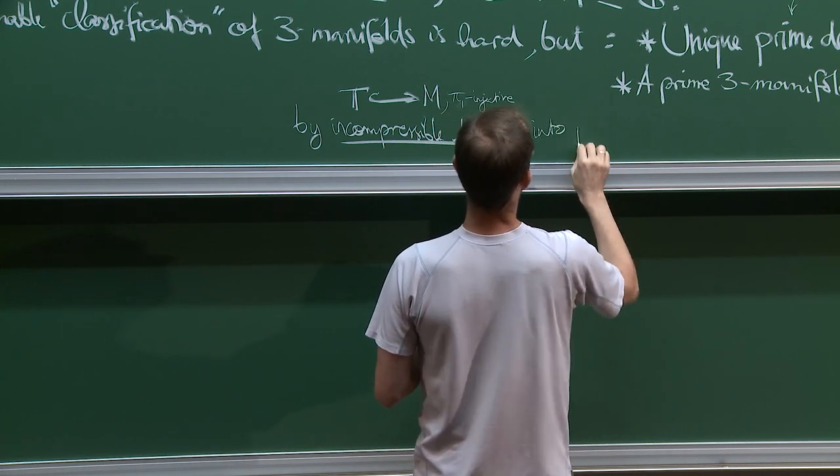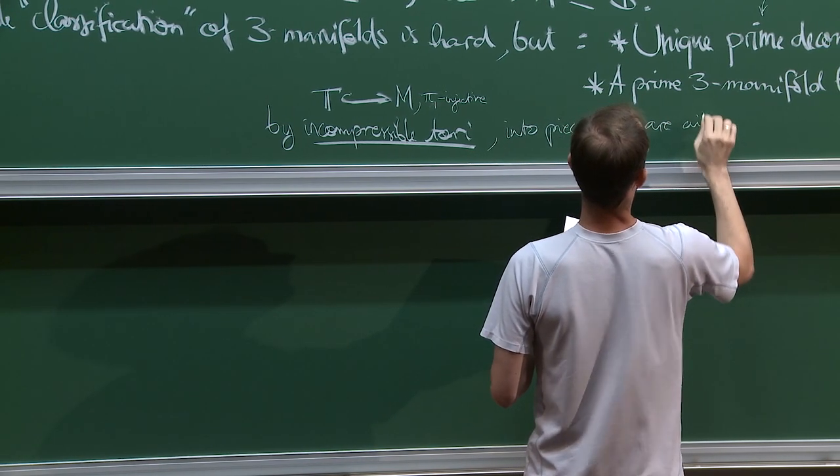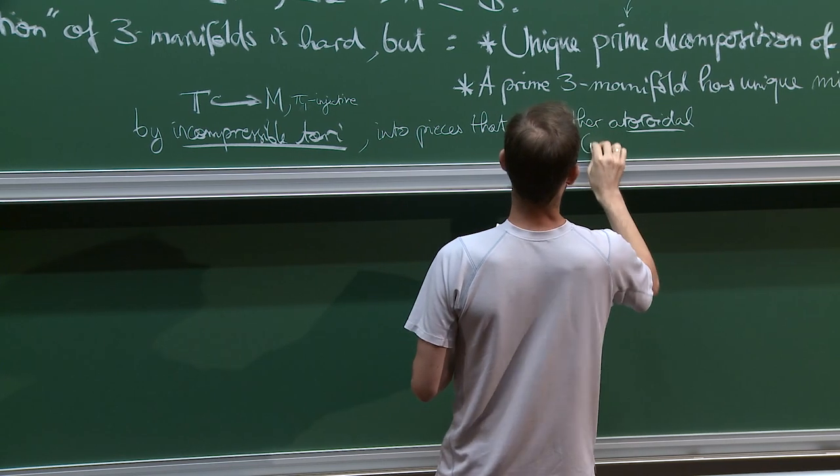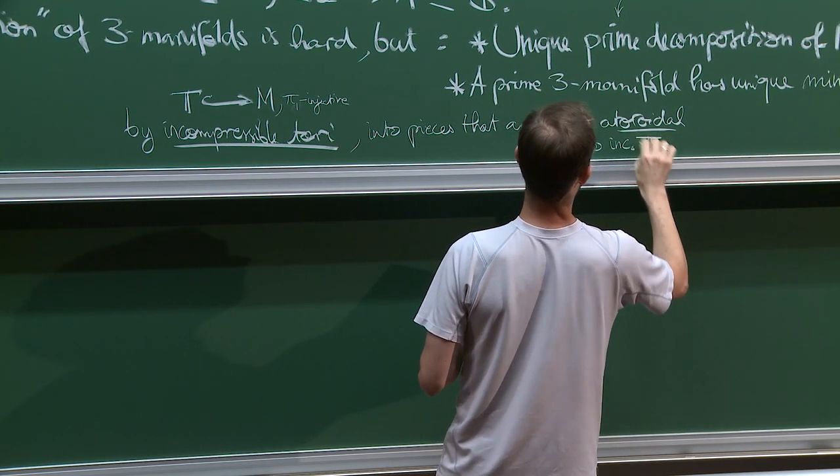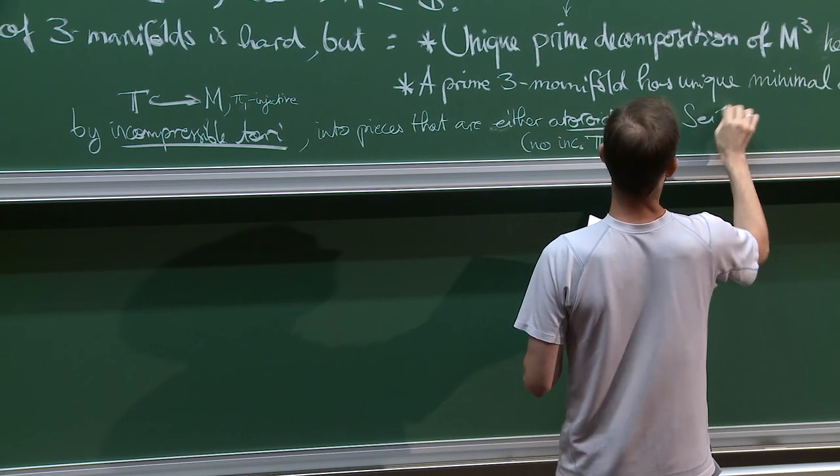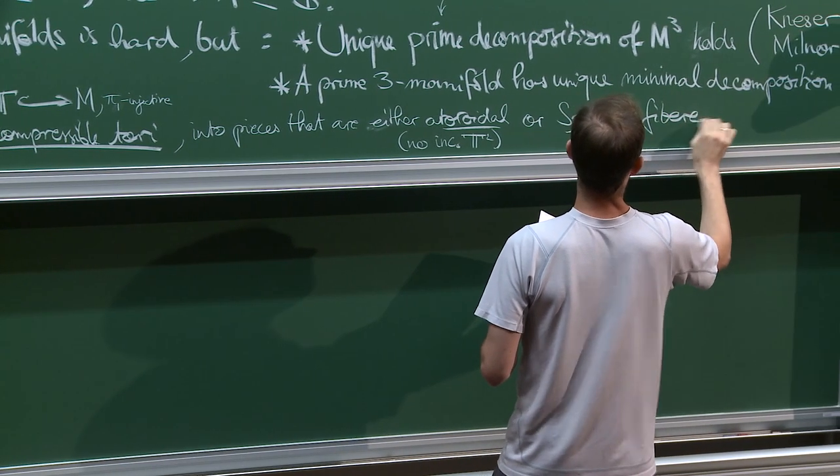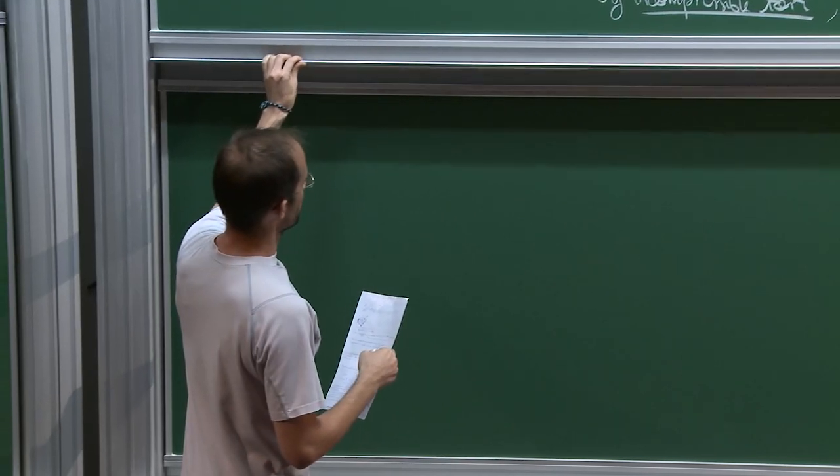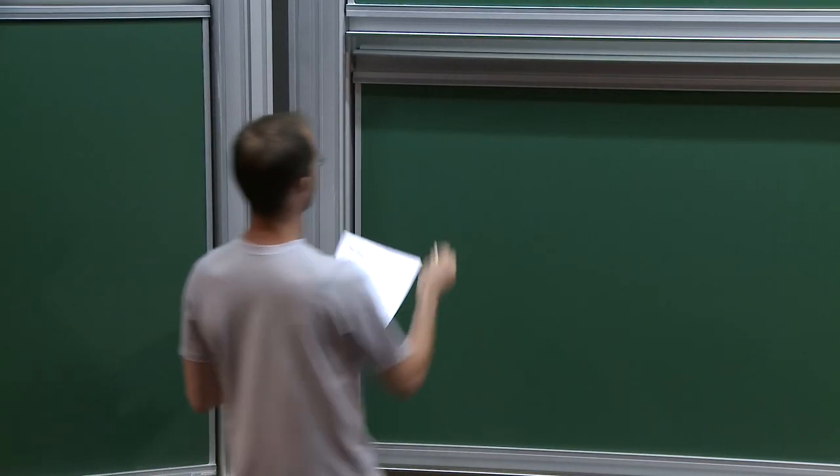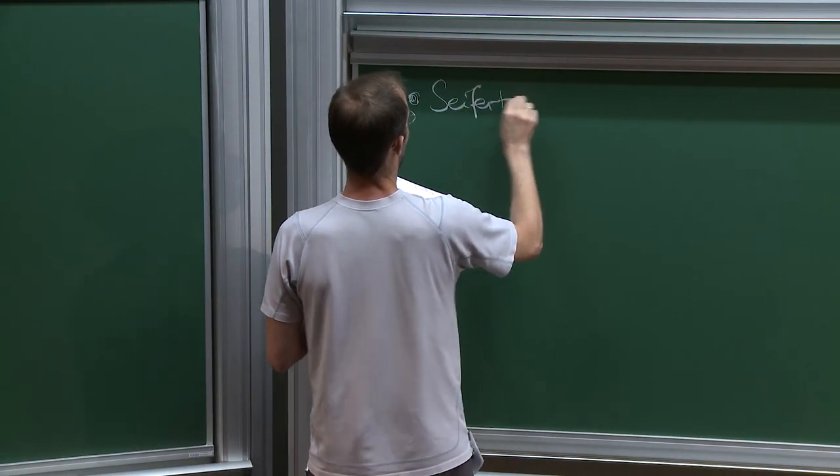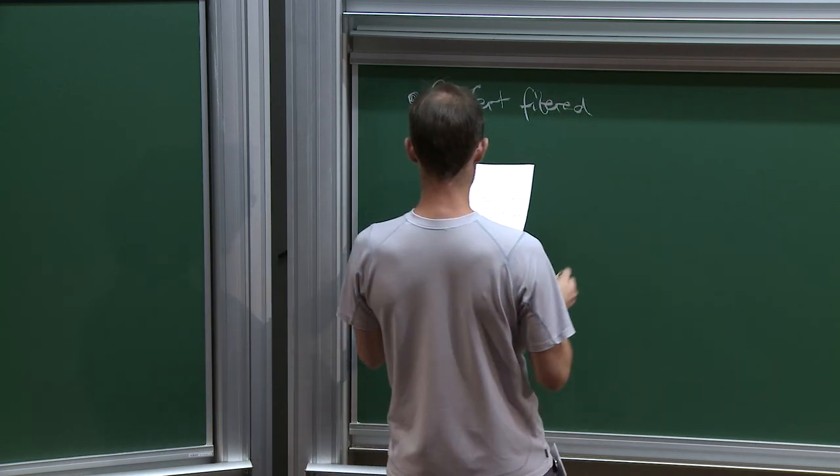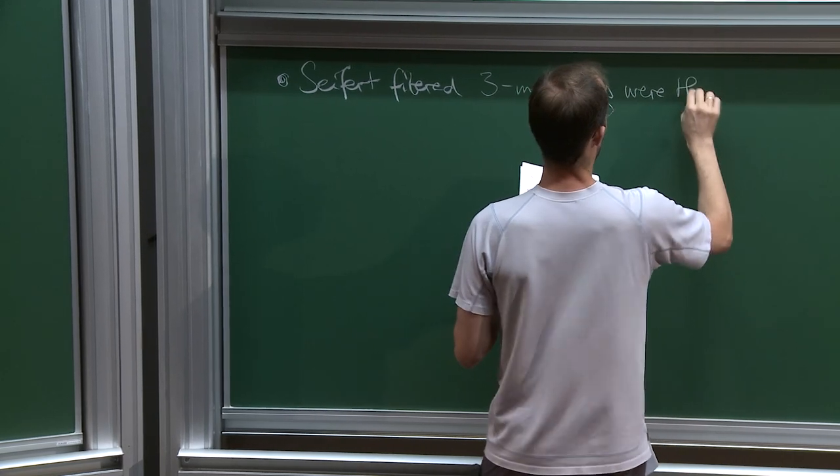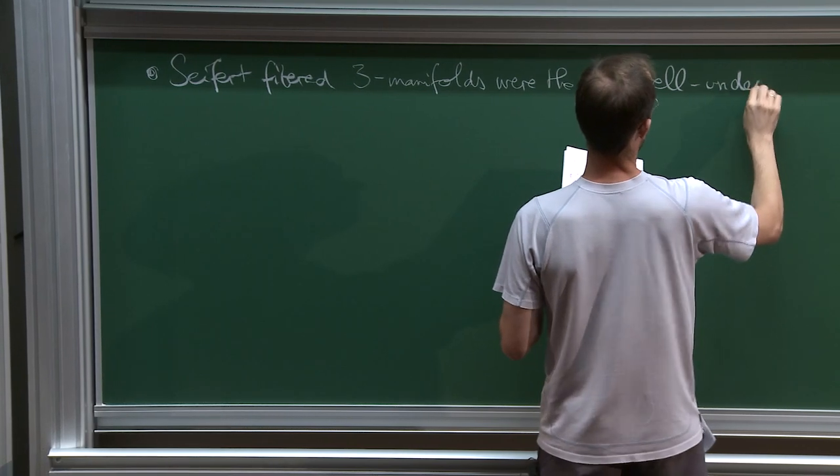So, if there are such tori, then you can cut along them. And what's left at the end is essentially unique into pieces that are either atoroidal, meaning no incompressible T2 any longer, or Seifert-fibered. So, I'm going to say now what Seifert-fibered manifolds are. This was the first class of 3-manifolds that can be said to have been well understood. So, Seifert-fibered 3-manifolds were the first well understood class by Seifert in the 40s.